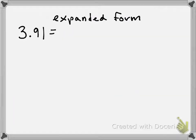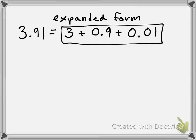Another way of representing decimals would be expanded form. If we're looking at this, three and ninety-one hundredths, we're going to stretch it out using addition. We have three wholes plus 0.9 tenths plus 0.01 hundredths. This represents 3.91.